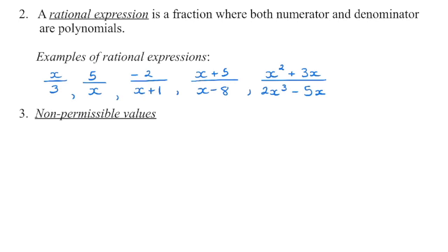Now we know that our denominator cannot be equal to zero. This is 3, so that's okay. This x is a variable representing any number, so x can be any number, but it cannot be zero. What would x have to be here that would make that denominator zero? That value, negative 1, is not allowed. So what we call non-permissible values are the values that are not allowed that would make that denominator equal to zero.